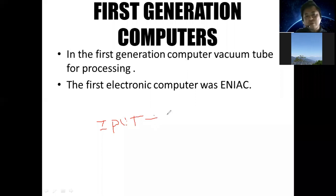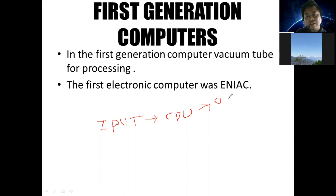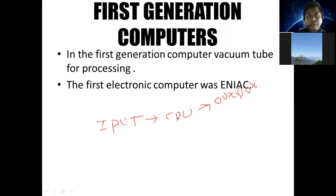The CPU — the central processing unit — processes the data. Output devices include a monitor, printer, speakers, and projectors. So basically, the user's output devices are monitor, printer, speakers, and projectors. Raw data goes in for processing.